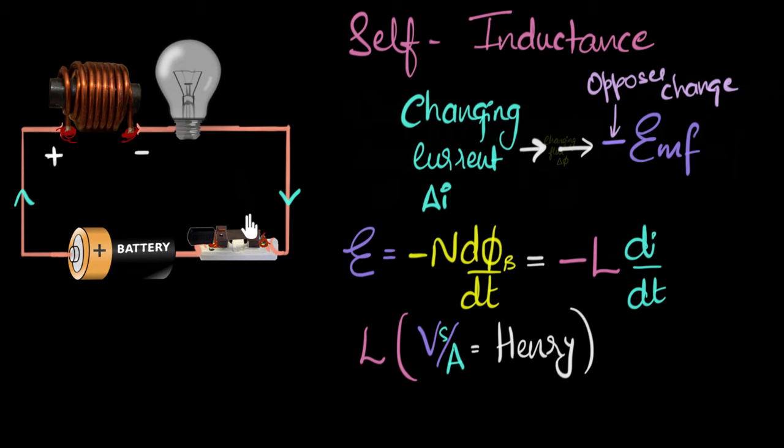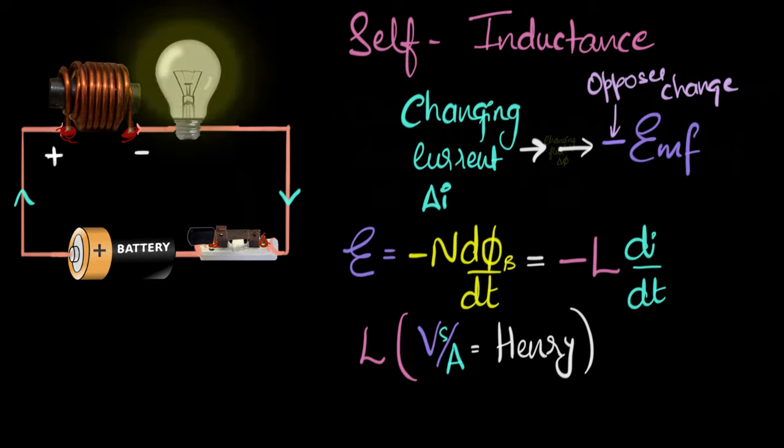And as the current keeps growing, the dI/dt starts reducing more and more, becomes smaller and smaller. And as a result, this induced EMF starts becoming smaller and smaller. The opposition starts becoming smaller and smaller. And that's why the current can start becoming larger and larger. And that's why slowly and steadily, the bulb starts glowing.